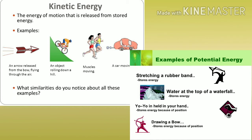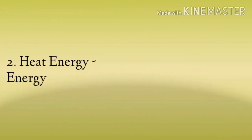Kinetic energy के examples — जब कोई arrow कमान में से निकल के जाता है, या sliding करते हुए, जब हम cycle चलाते हैं, muscles moving, जब car move होती है — यह सब kinetic energy में आएंगे. Potential energy में — जब हम एक रबड को stretch करते हैं तो store energy काम में आती है; water at the top of a waterfall — waterfall से पहले जो water है उसमें जो energy store होती है, वो potential energy होती है.